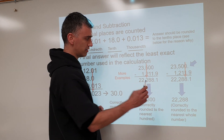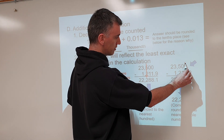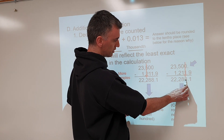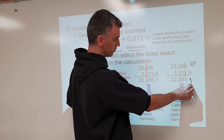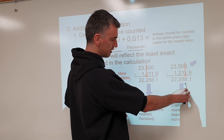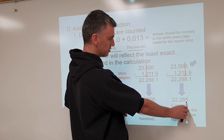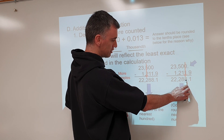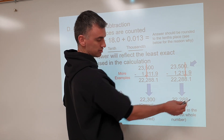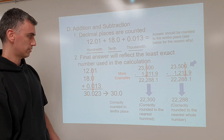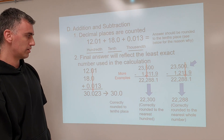These numbers have to maintain their same value. In the second example the arrow points to the final 8 at the end; that 8 is next to a 1, so it does not round up — it stays as 8. That's why the answer is 22,288. Because it's the last digit before the decimal we leave it like that.